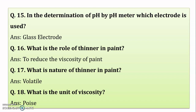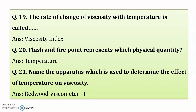What is the unit of viscosity? This question is based on experiment number 12, the effect of temperature on the viscosity of a given lubricating oil. The unit of viscosity is the poise. The rate of change of viscosity with temperature is called the viscosity index.